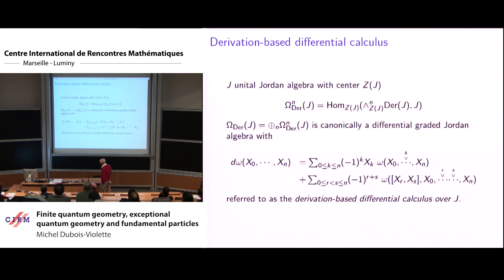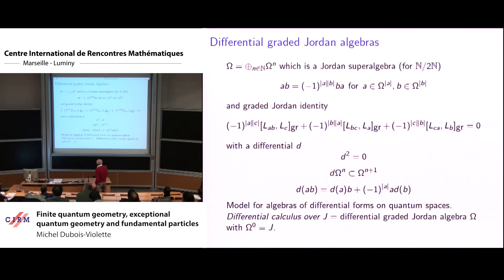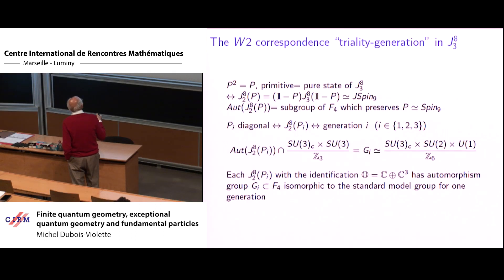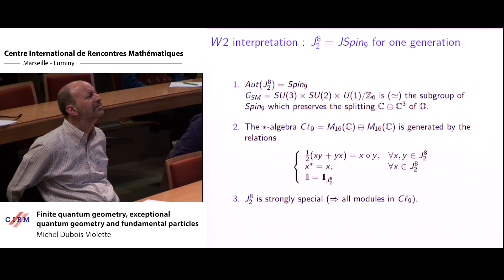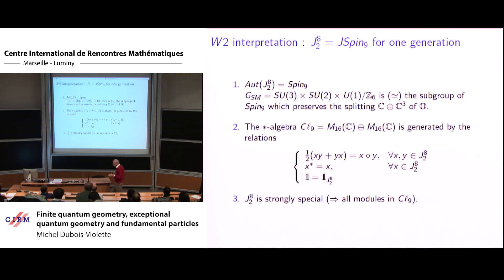In this 16×16 matrix algebra you can see immediately that you have exactly what is needed to fit everything in a space of dimension 32 — which is exactly what you need to place the whole particle content of one generation of the standard model. I have not the time to explain all the details about how the observables sit in the diagonal part, but this is where it lives.